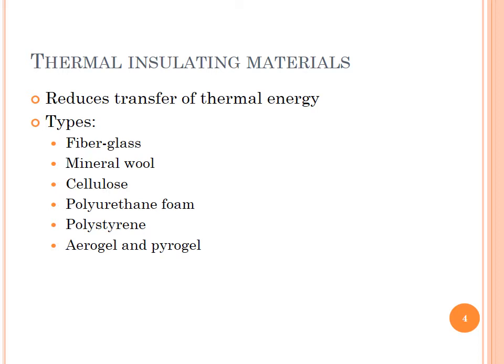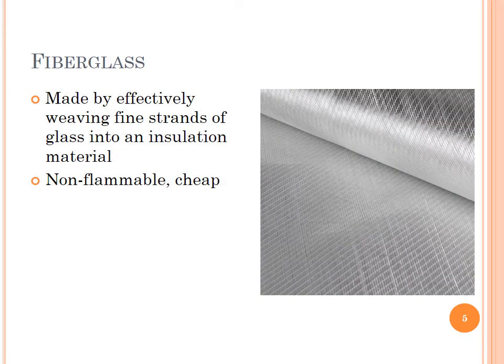The different types of thermal insulating materials are fiberglass, mineral wool, cellulose, polyurethane foams, polystyrene, aerogel and pyrogel. Fiberglass is made by effectively weaving fine strands of glass into an insulation material. It is non-flammable and cheap.